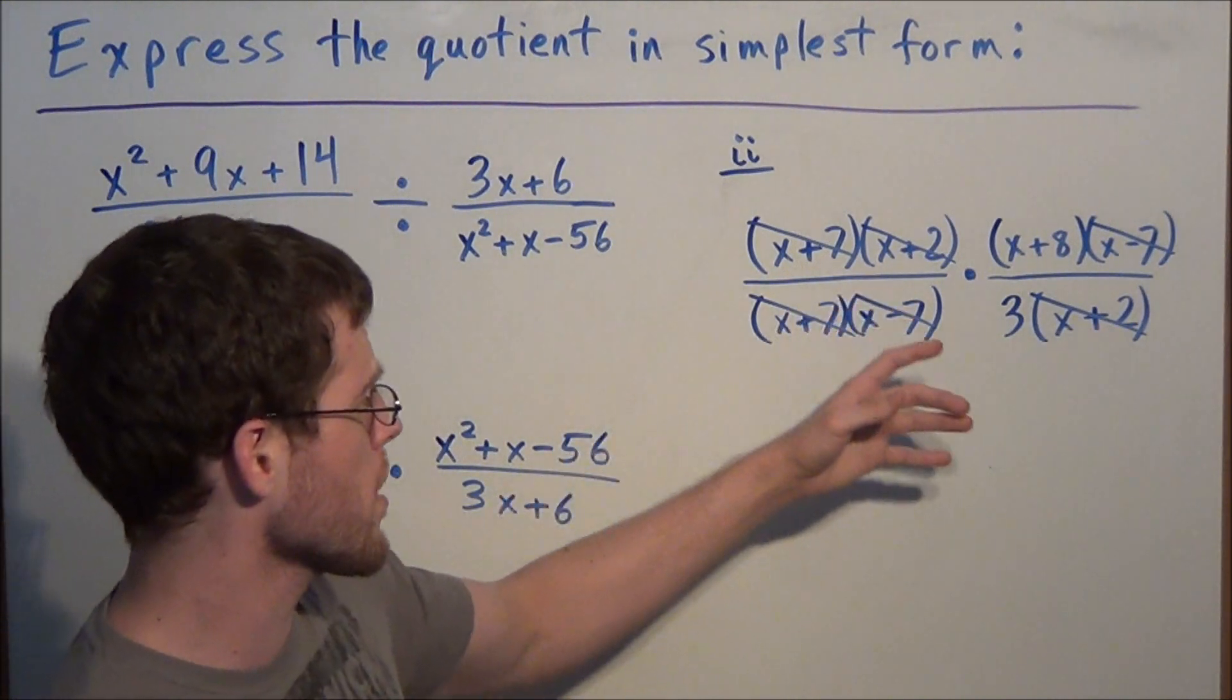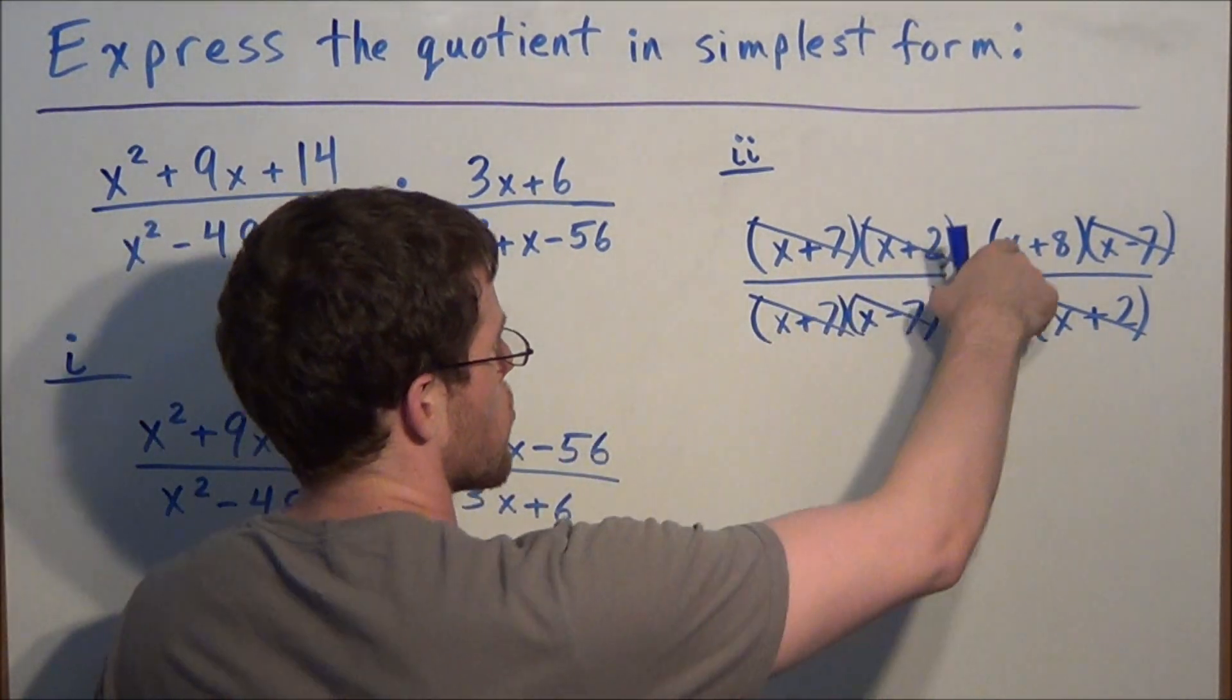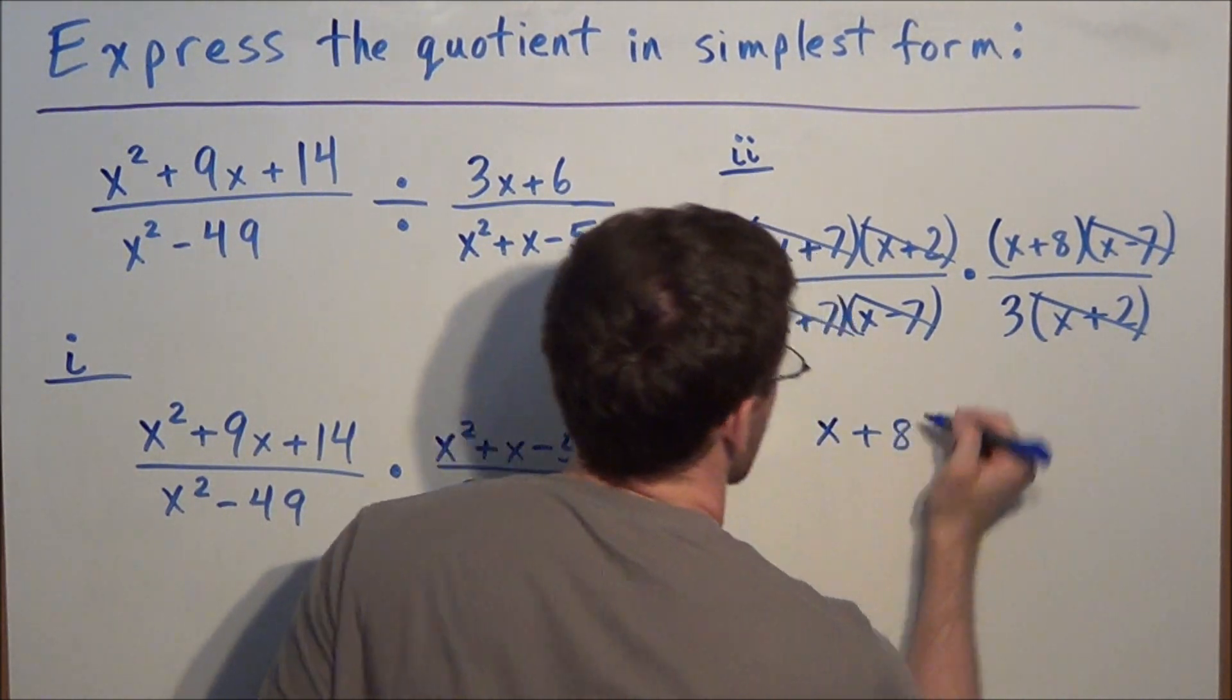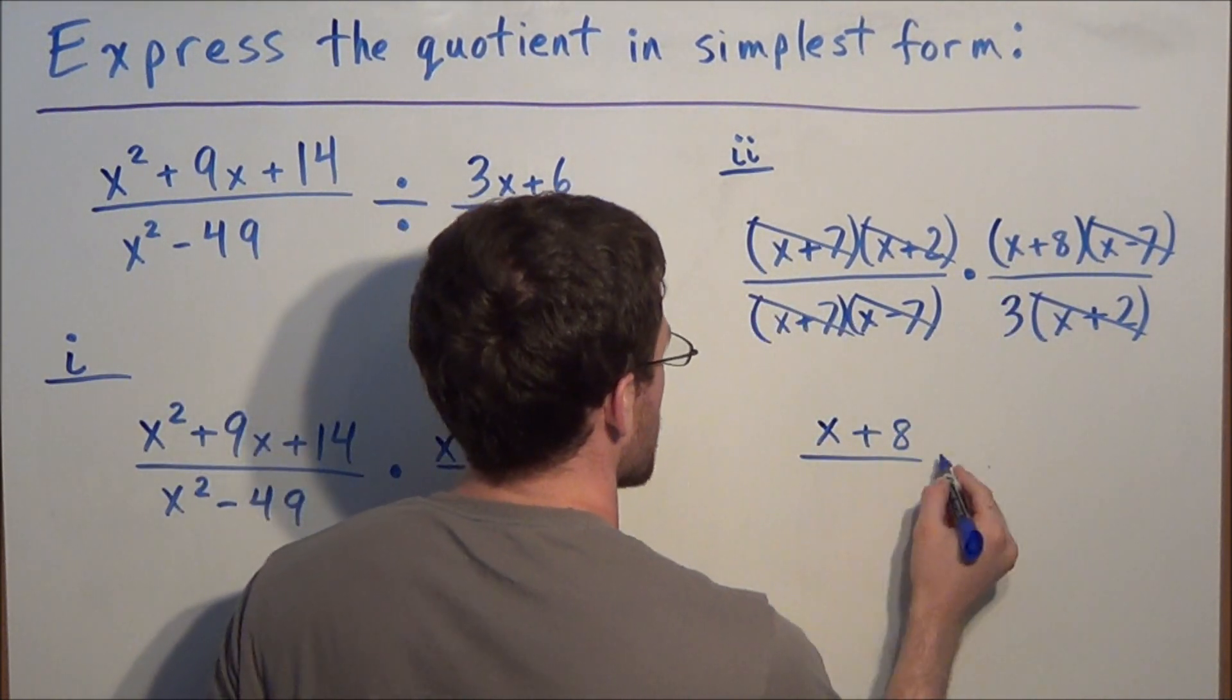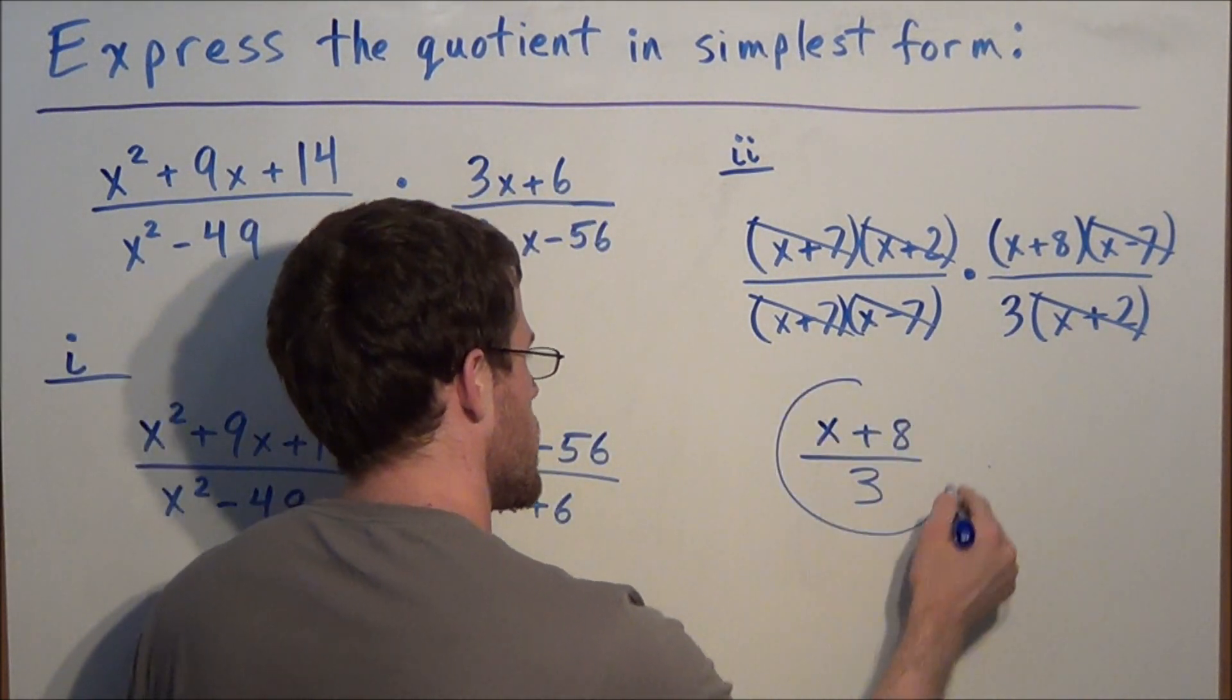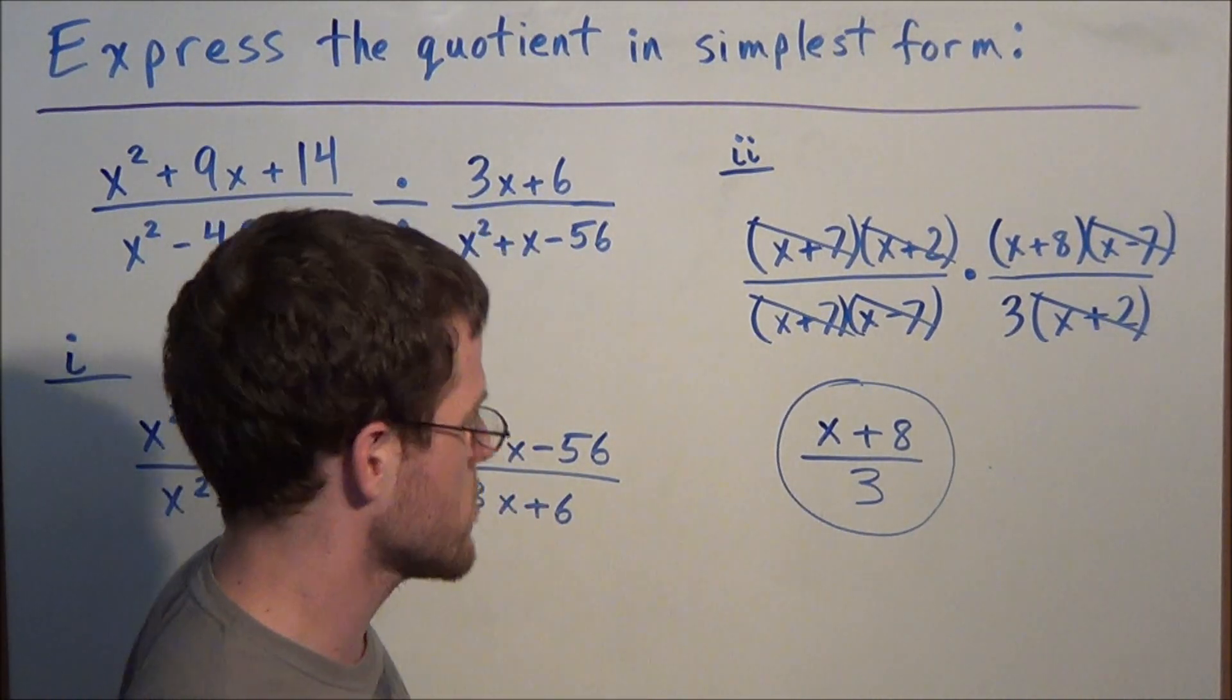We just rewrite all that remains. In the numerator, we have x plus 8. This is the only factor that we didn't cross out. And in the denominator, we have positive 3. We could go ahead and circle this and label this as our answer.